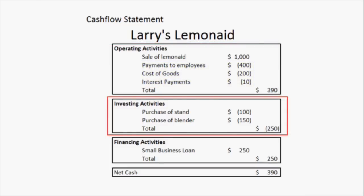Investing activities cover things like the actual purchasing of an asset. For example, we have a lemonade stand that was purchased for $100 — you see that there in parentheses, meaning a negative number. They also purchased a blender to probably blend the lemons and mix all the sugar and everything else. So we have a negative $250 in the investing activities section.